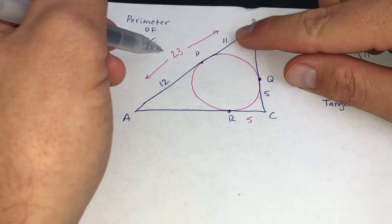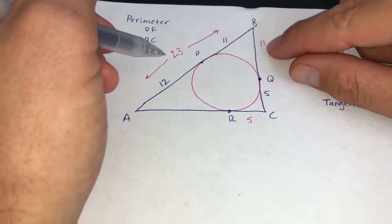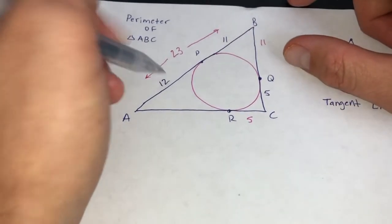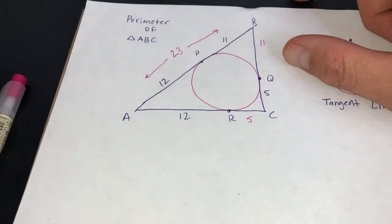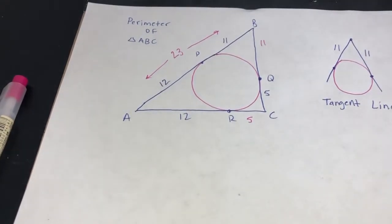So this is 11, so this has to be 12, because these are both tangent lines. Again, this is 12. So doing a little math here, we're just going to add everything up.